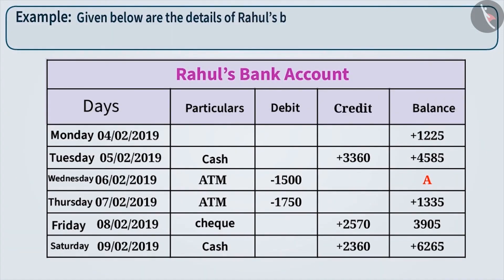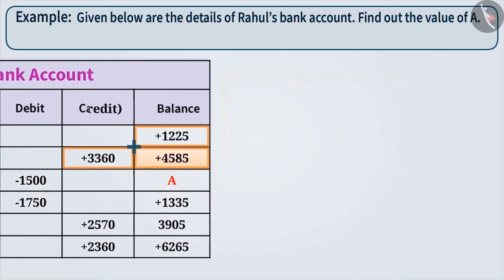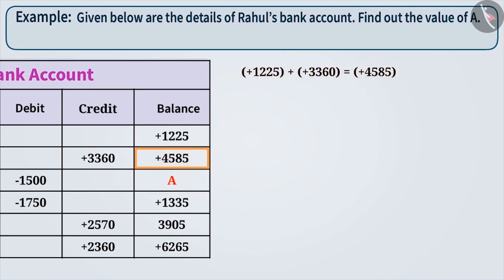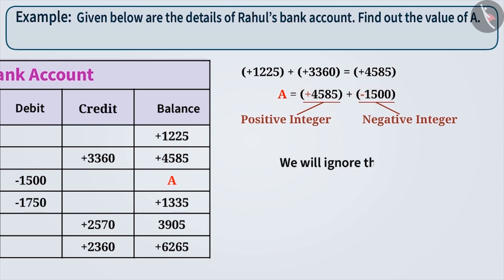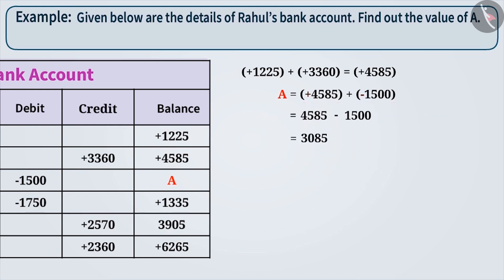Example 1: given below are the details of Rahul's bank account. If we add plus 4,585 and minus 1,500, then we get the value of A. By adding the money credited or debited to the balance, we get a new balance. That is, A is equal to 4,585 plus minus 1,500. You must have noticed that we are adding a positive and a negative integer. To solve this, ignore the signs and subtract the smaller number from the larger number, resulting in 3,085. Now, add the sign of the larger number, which is plus, to the result, resulting in plus 3,085.